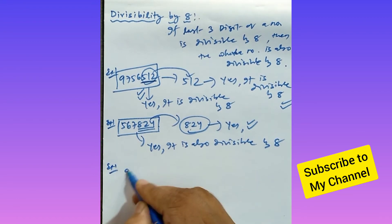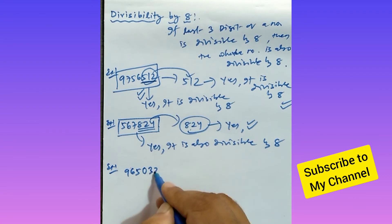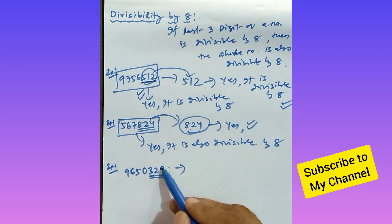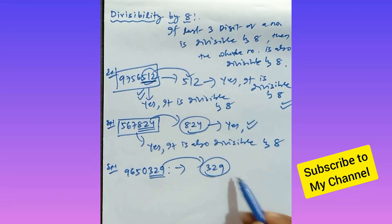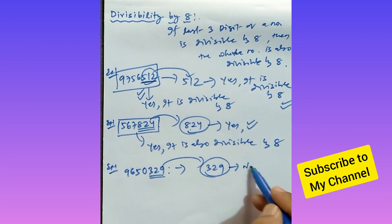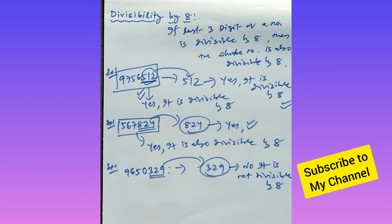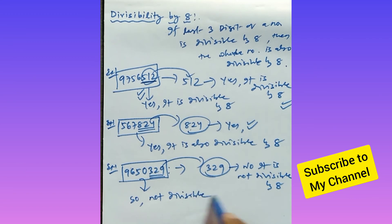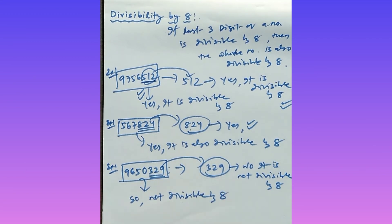One more example: take the number 9650329. Look at the last three digits — that is 329. Is 329 divisible by 8? No, it is not divisible by 8. So this big number is not divisible by 8.